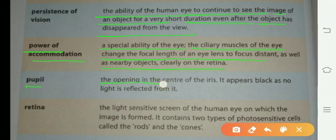Pupil: the opening in the center of the iris. It appears black as no light is reflected from it.